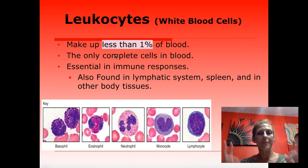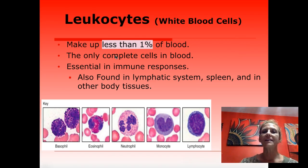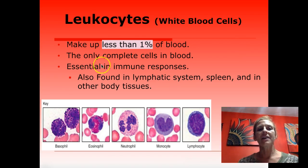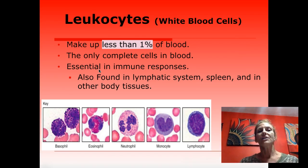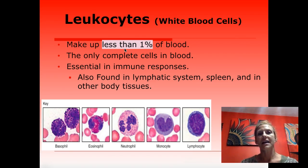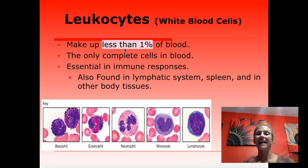White blood cells are pretty interesting — you're probably familiar with the concept that when you're sick, your white blood cell count rises, which indicates illness to your doctor. The different types of white blood cells, and which type is increasing, can help narrow down what kind of infection you have. Leukocytes make up less than 1% of your blood. They are the only complete cells in your blood, meaning they have all their parts — unlike red blood cells, which lack a nucleus and mitochondria.